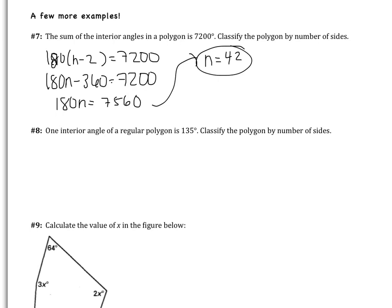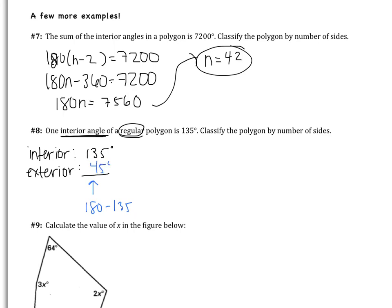Extra example 8: one interior angle of a regular polygon is 135 degrees — classify by number of sides. Since interior and exterior angles are supplementary, the exterior angle is 180 minus 135 equals 45 degrees. The exterior angles sum to 360, so 360 divided by 45 gives 8 sides.